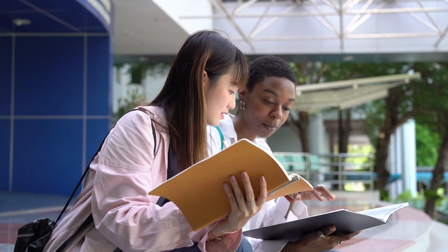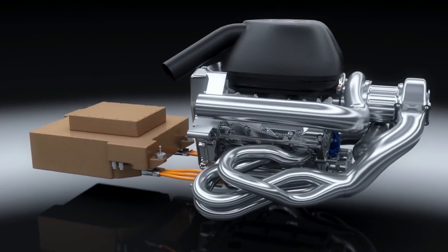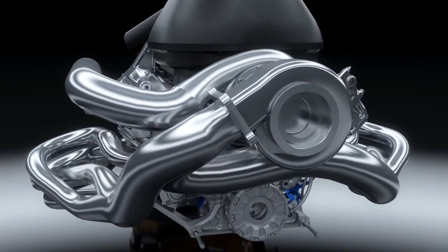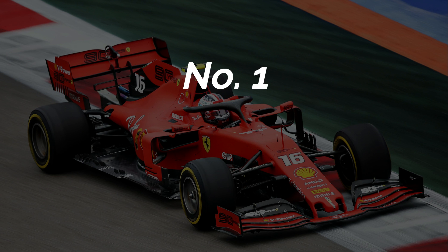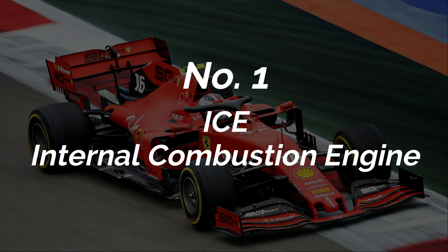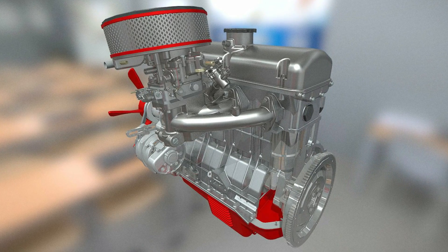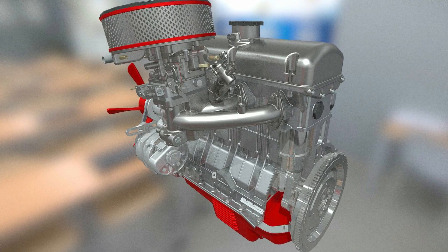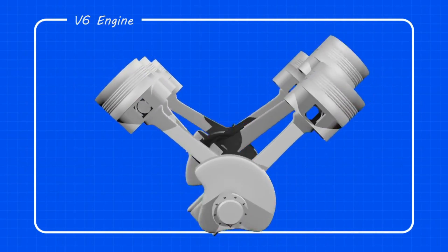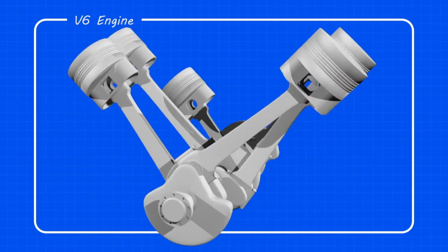To understand engine penalties, we first need to understand the components of an F1 power unit. The modern Formula One power unit is composed of seven elements. Number one: ICE, or internal combustion engine. This is the heart of the power unit. It's a structural member of the car connecting the chassis to the gearbox. Current F1 engines are six-cylinder engines constructed in a V configuration at 90 degrees, thus the name V6.